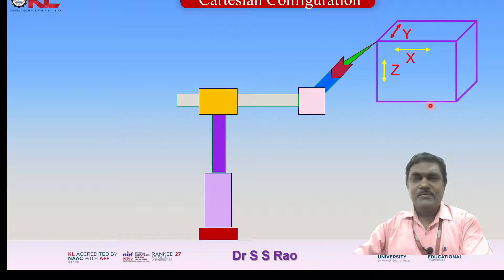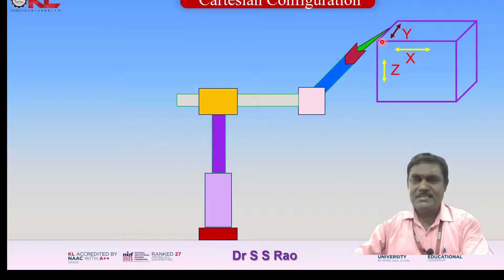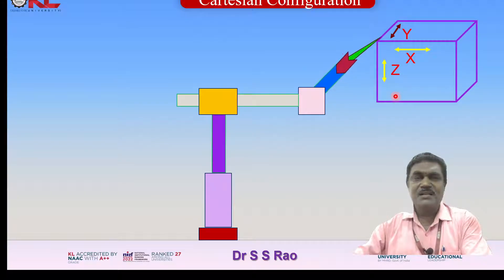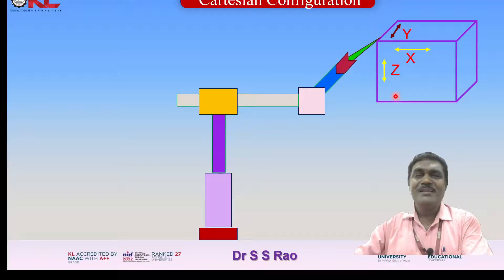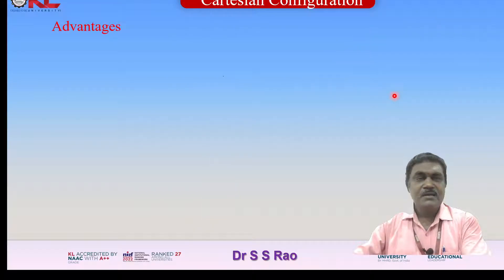The robot moves forward and backward, designated as the Y axis. The work envelope is defined by the maximum movement along Z, X, and Y axes — the space it covers is called the workspace. This configuration uses only linear motions; there are no rotary motions involved. Only linear manipulators are used in Cartesian configurations.